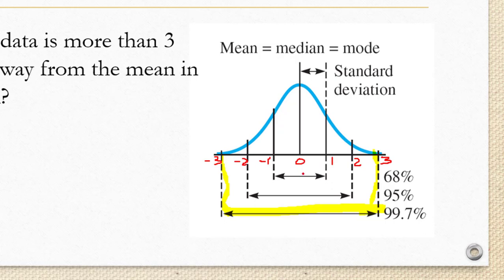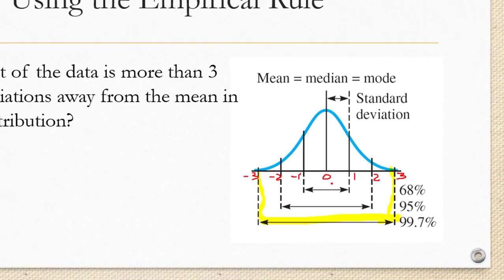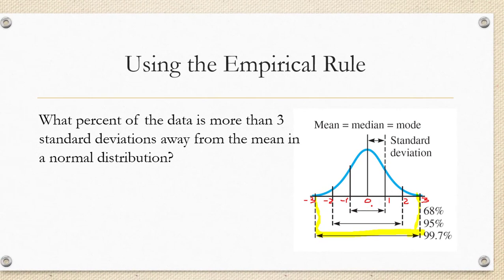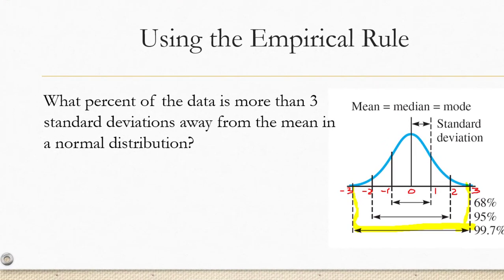According to the empirical rule, 99.7% of the data lies within that interval. We're being asked how much of the data is outside of that interval.